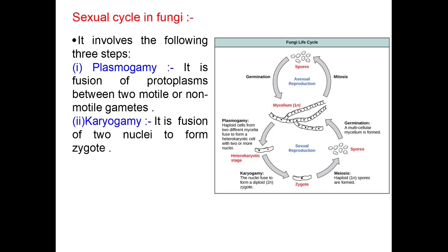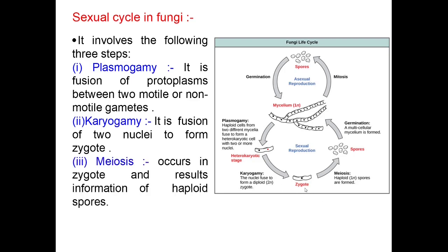Then karyogamy — it is fusion of two nuclei to form a zygote. Then meiosis, which occurs in the zygote and results in formation of haploid spores. This is the reproductive sexual cycle in fungi. These spores germinate and form the haploid plant body.